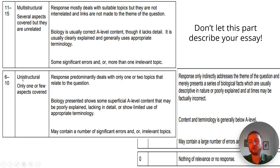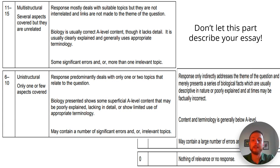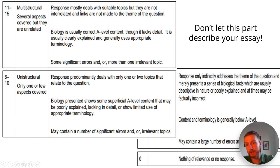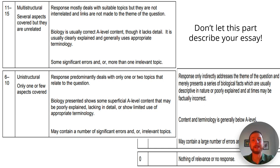Next, 'unistructural': only one or few aspects covered. The response predominantly deals with only one or two topics that relate to the question. Biology presented shows some superficial knowledge that may be poorly explained, lacking in detail, or showing limited use of appropriate terminology. It may contain a number of significant errors or irrelevant topics. You can avoid this by covering at least three to four topics as a minimum, making sure you link to the question, and including at least four relevant topics.